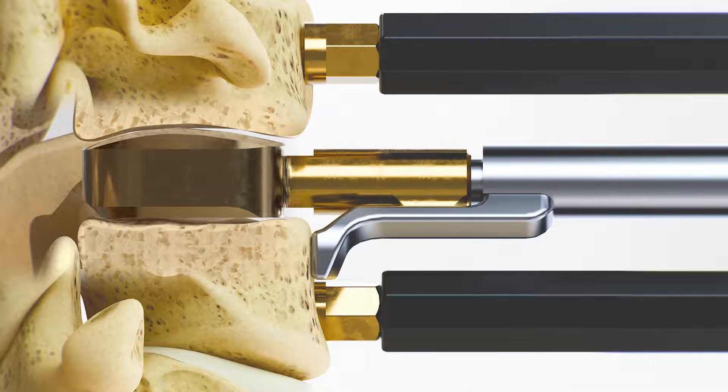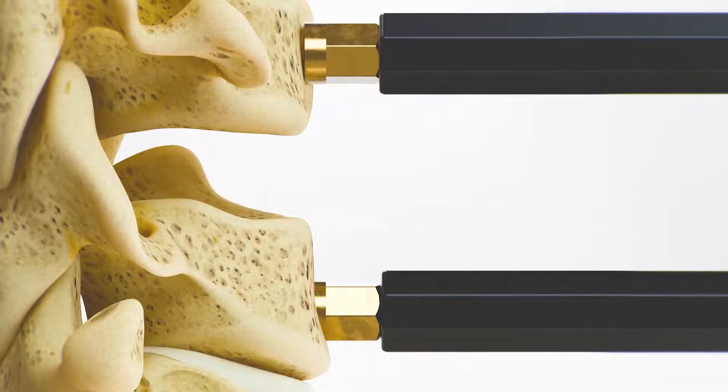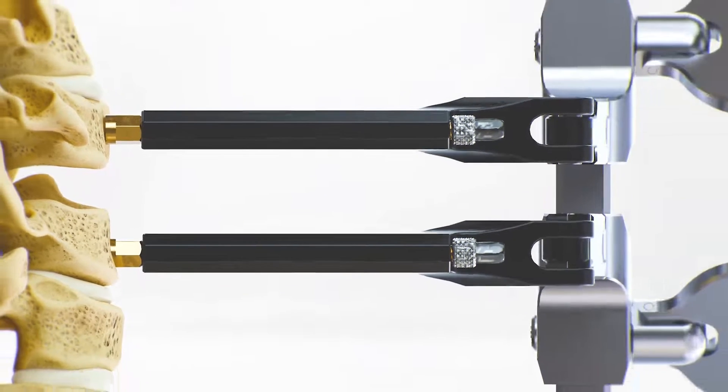Once satisfied with the trial position, release distraction to evaluate trial height. Remove the trial. The vertebral bodies are ready to be implanted with the ProDisc C vivo implant.